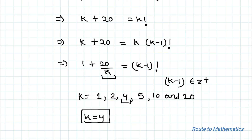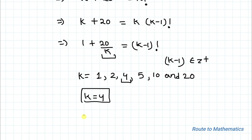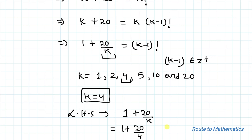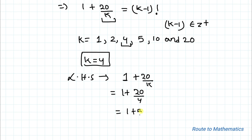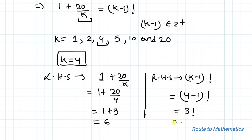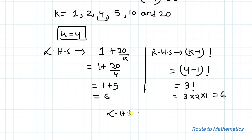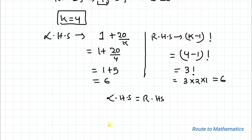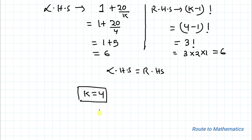The only value satisfying the equation is k = 4. Let's verify: on the left-hand side, 1 + 20/4 = 1 + 5 = 6. On the right-hand side, (k−1)! = (4−1)! = 3! = 3 × 2 × 1 = 6. Since LHS = RHS = 6, the only solution is k = 4.